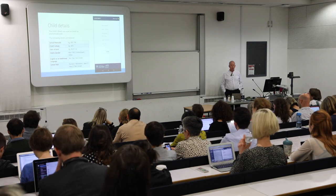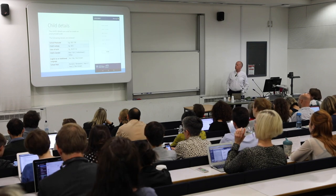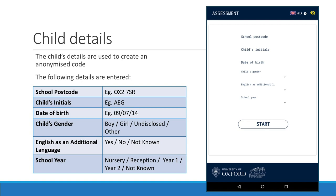When you launch the app on the tablet you're taken to an initial screen where you're asked to give the following details: the school postcode, the child's initials, their date of birth, and their gender.